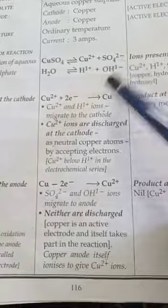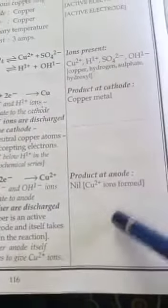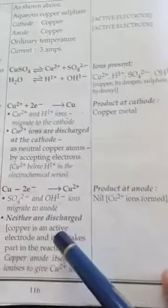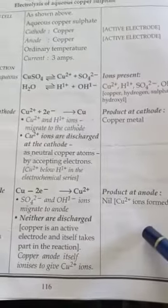instead of sulphate ions, OH ions will be released that will form oxygen here. So oxygen will form at anode if we use inert electrodes here, then oxygen will be formed.